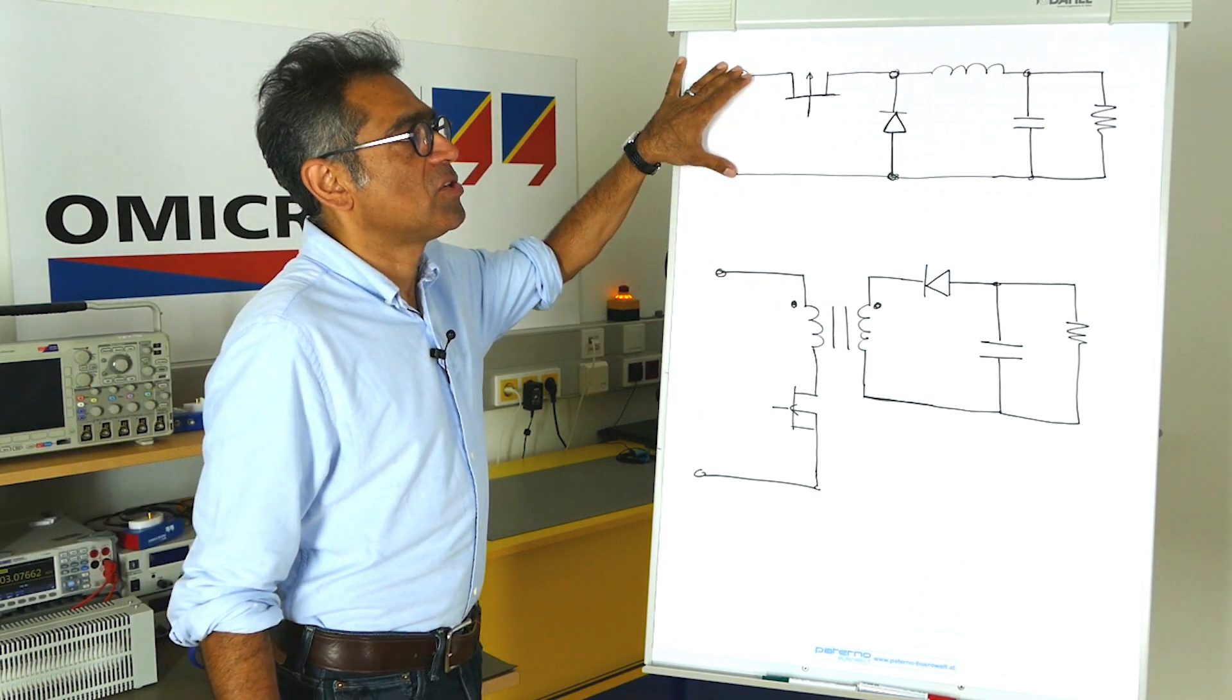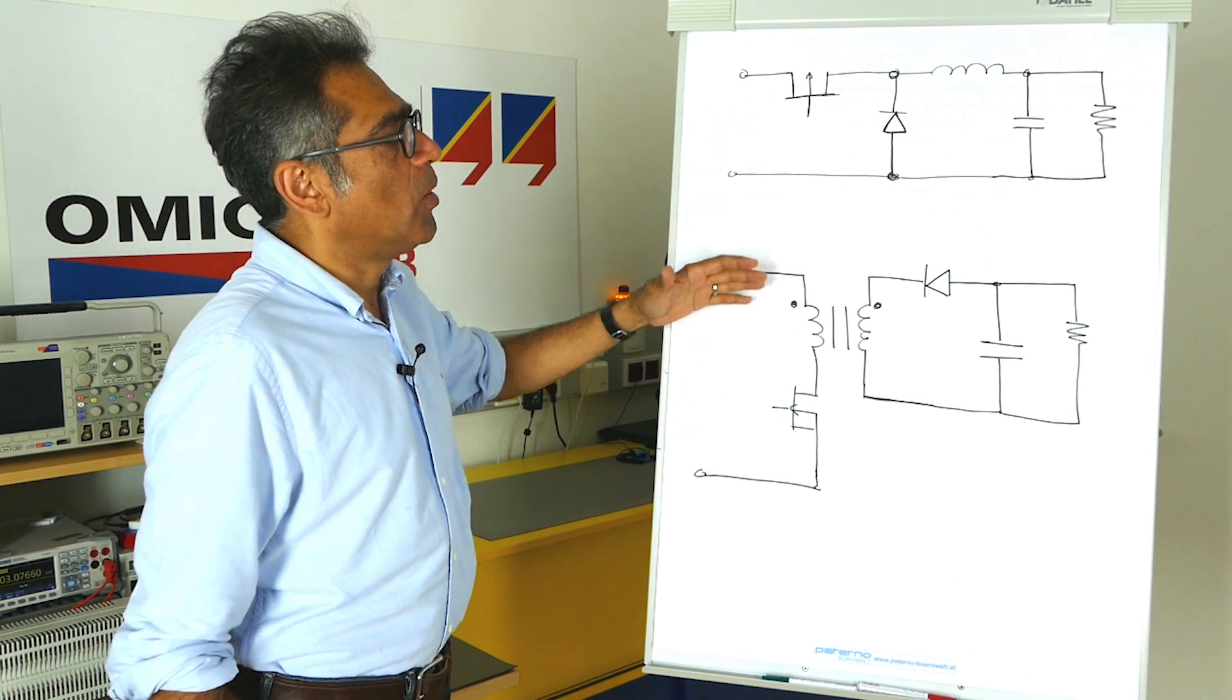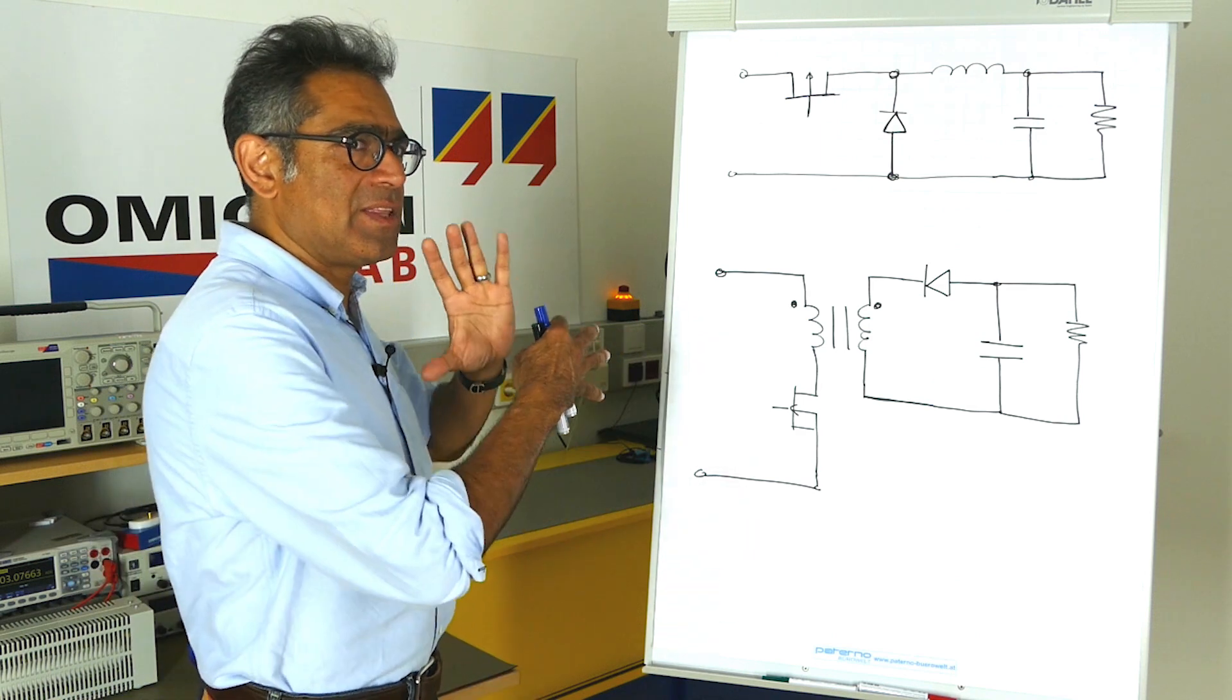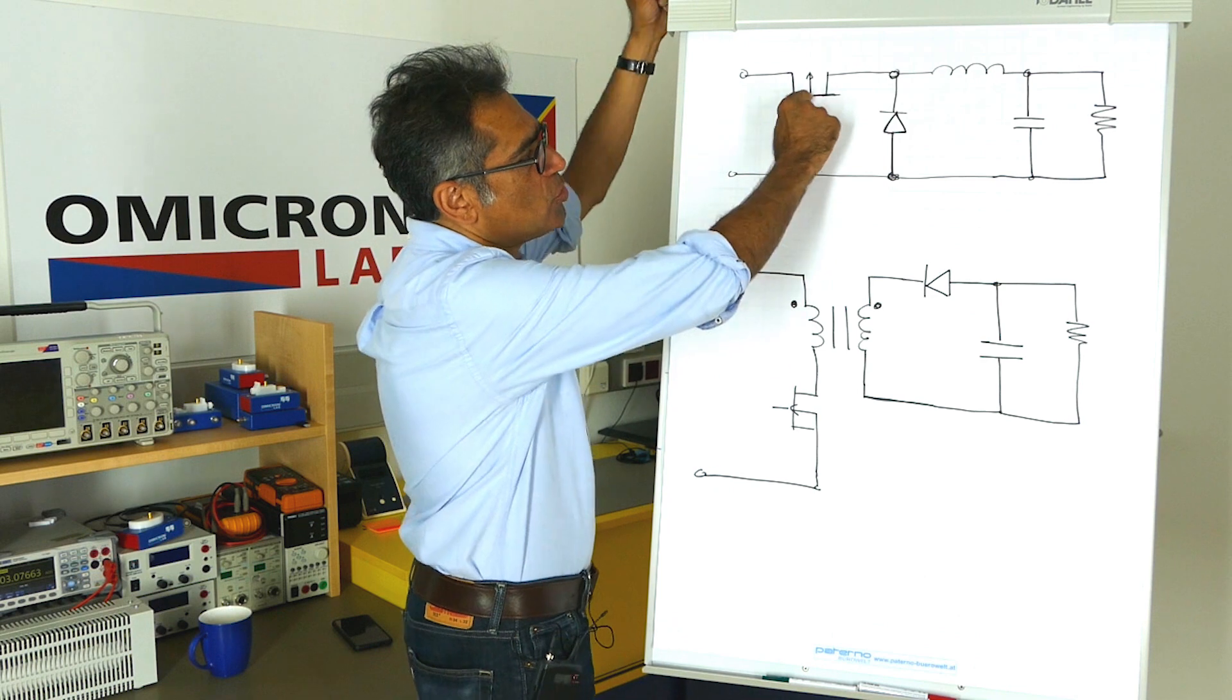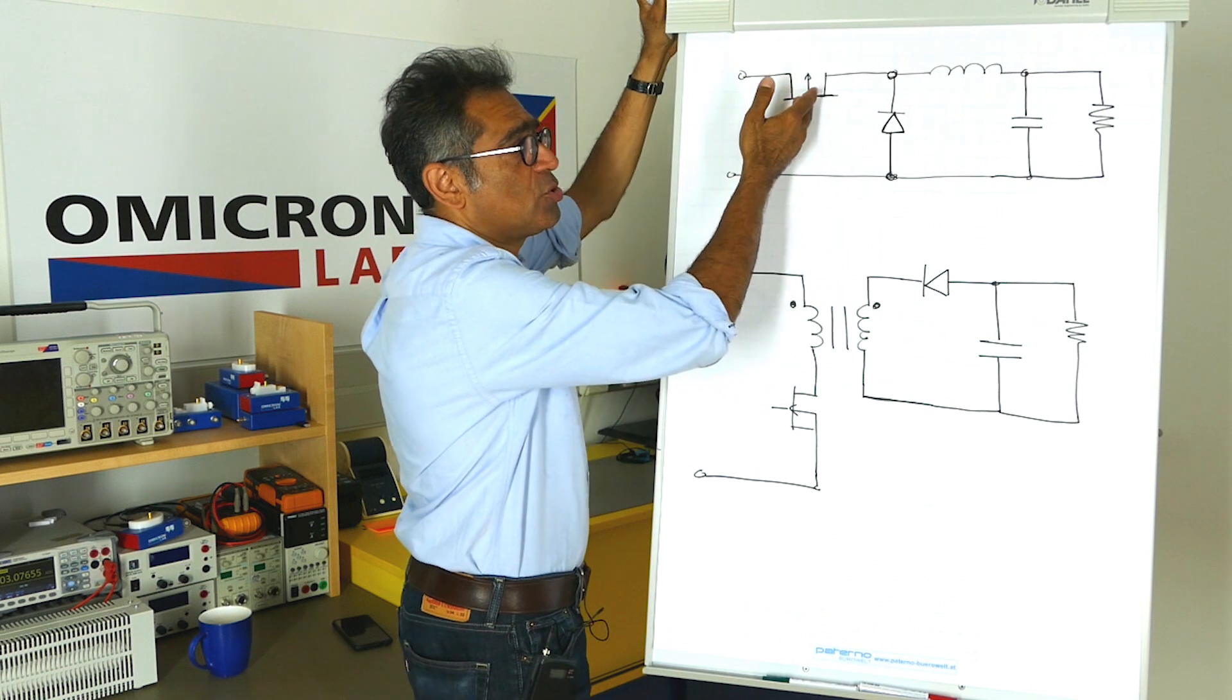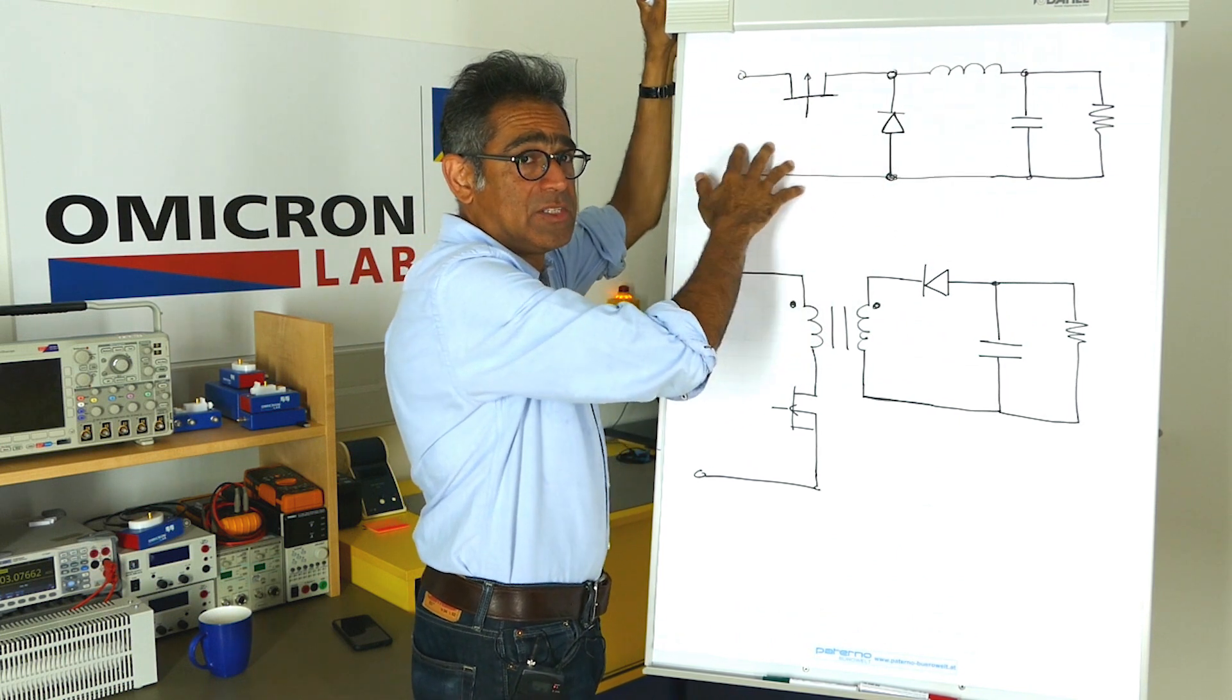Now the buck converter does not have a right-hand plane zero, but the flyback does. Let's see how these two operate and how the right-hand plane zero shows itself within the way that the duty cycle works. In the buck converter, when you turn the switch on you deliver power from input to output, and when you turn the switch off you don't deliver power from input to output. It's very simple and straightforward.